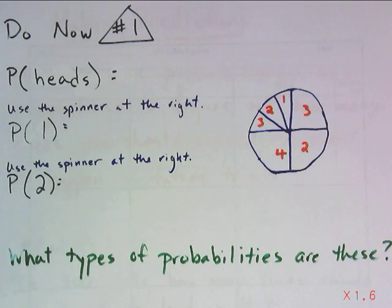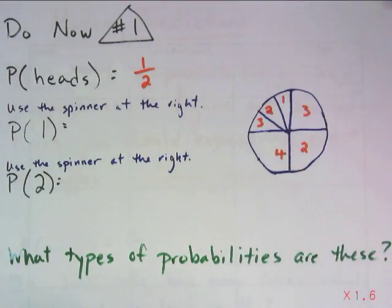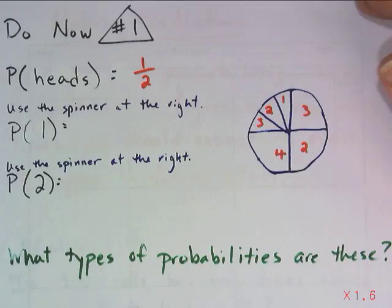So let's see how you did. The probability of landing on heads when you flip a coin is one out of two. Your coin has two sides, heads is one of them, so you have a one-half chance of landing on heads.